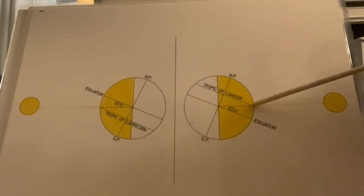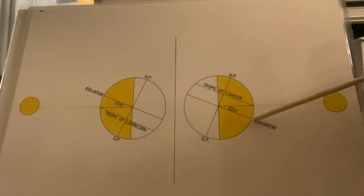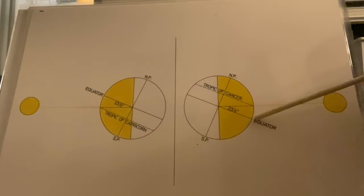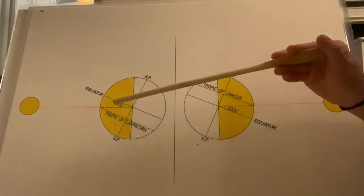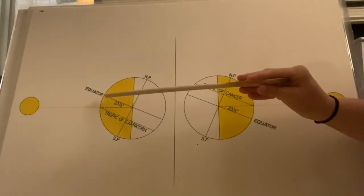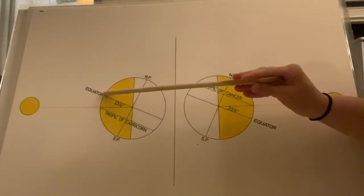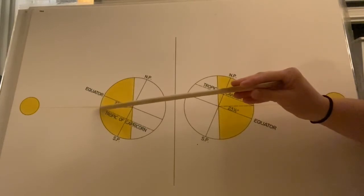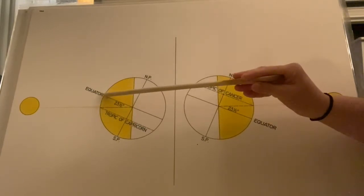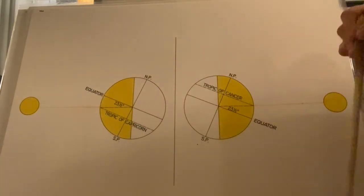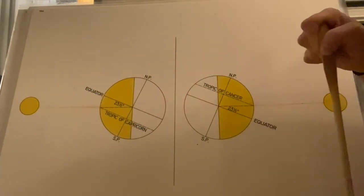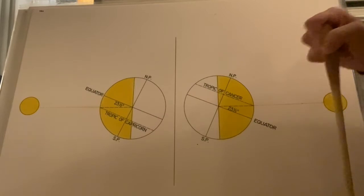This is the angle between the equator and the Tropic of Cancer — that's 23 and a half degrees. So it goes up 23 and a half degrees from the equator to the Tropic of Cancer, and the same thing on the other side: 23 and a half degrees from the equator down to the Tropic of Capricorn.